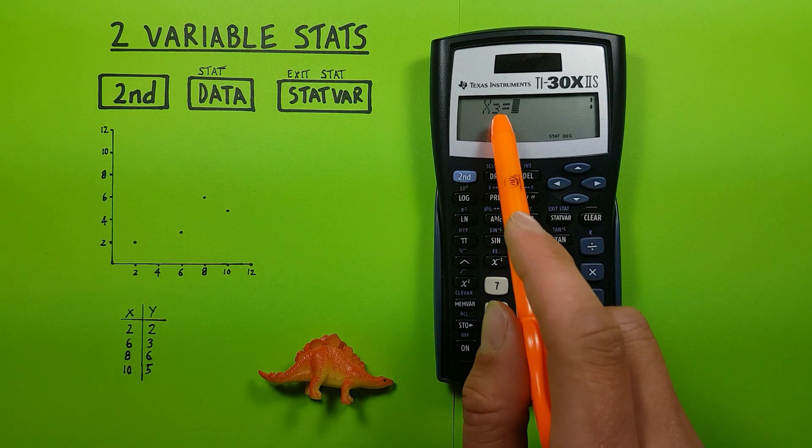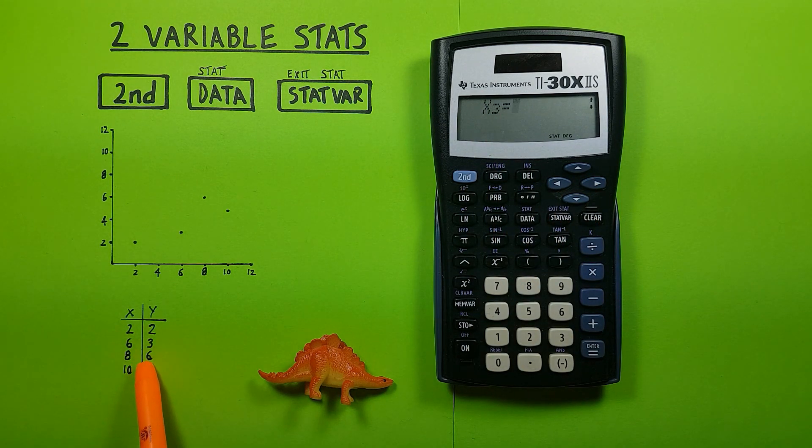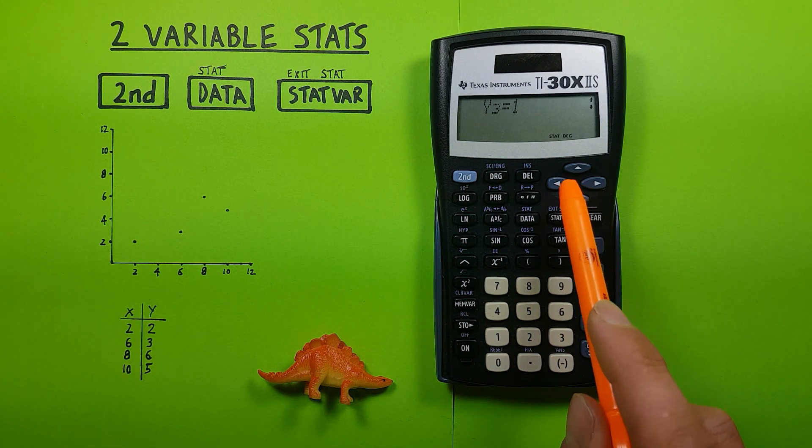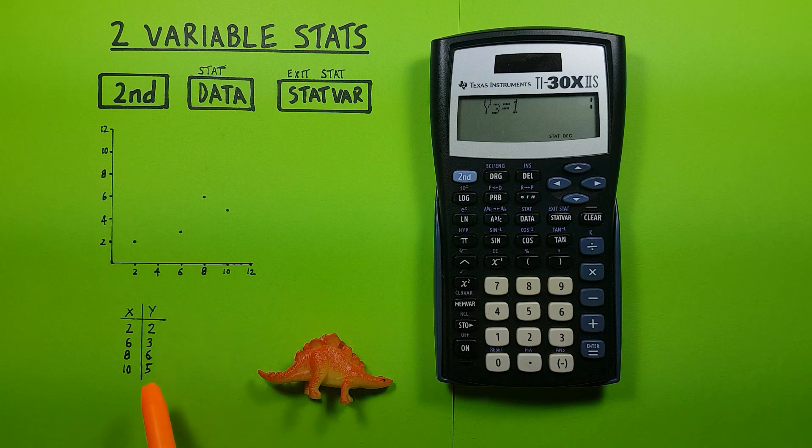Down again, x3 our third point x equals 8, down y3 our third y is 6.